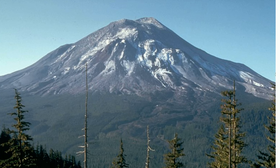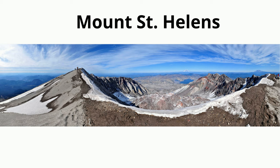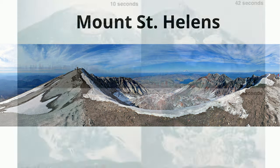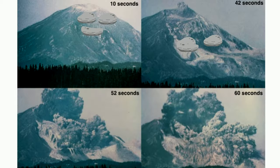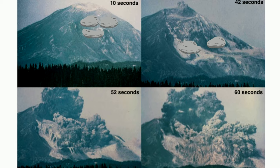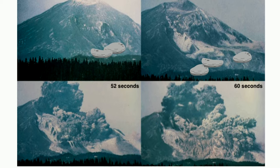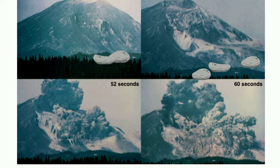How did Mount St. Helens go from this to this? Many people know that Mount St. Helens was a volcano and it exploded in 1980. However, seconds before the explosion, Mount St. Helens had a massive landslide in which almost half the mountain slid downward due to gravity.